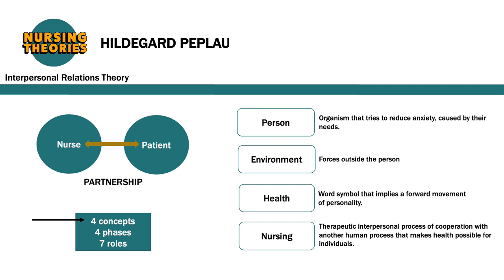The four concepts are person, environment, health, and nursing. Person is related to the organism that tries to reduce anxiety caused by their needs. Environment is related to the forces outside the person. Health is described as a word symbol that implies a forward movement of personality. And nursing is a therapeutic interpersonal process of cooperation with another human process that makes health possible for individuals.